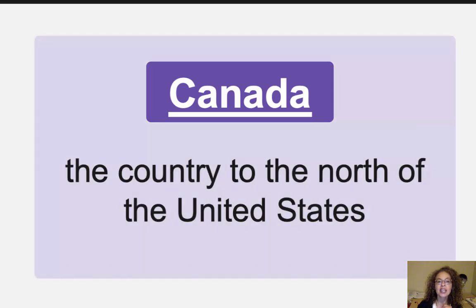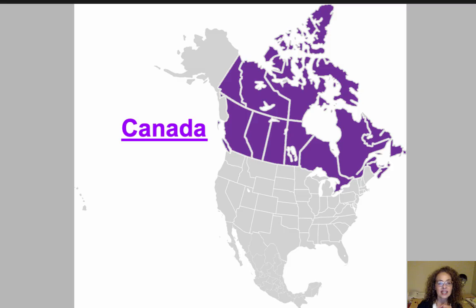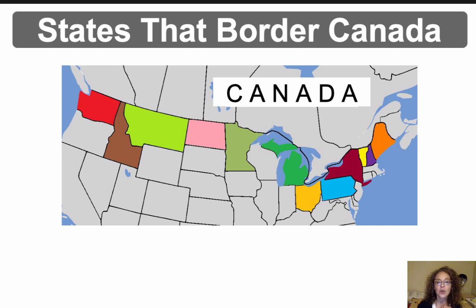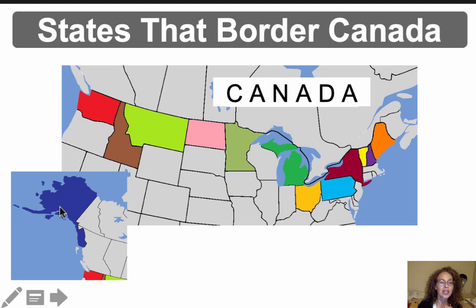Canada is the country to the north of the United States. To the north of the United States, we have all of Canada, and up there is Alaska. The northern border of the U.S. stretches for more than 5,000 miles from Maine in the east to Alaska in the west. There are 13 states that border the official boundary with Canada.